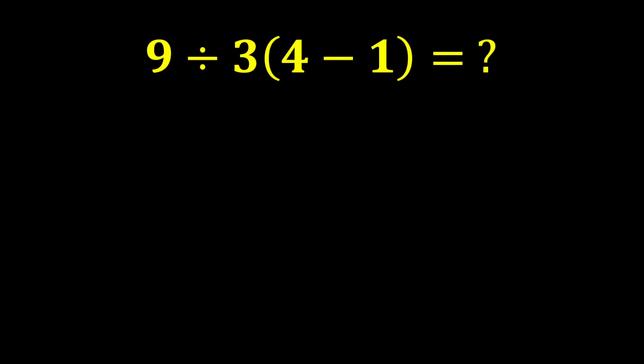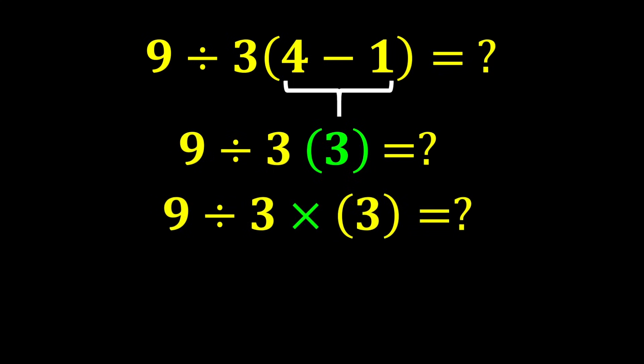9 divided by 3 times 4 minus 1. According to PEMDAS, we first calculate the parentheses. 4 minus 1 gives us 3. The expression becomes 9 divided by 3 times 3. When a number is placed next to parentheses, it means multiplying that number by the expression inside the parentheses.